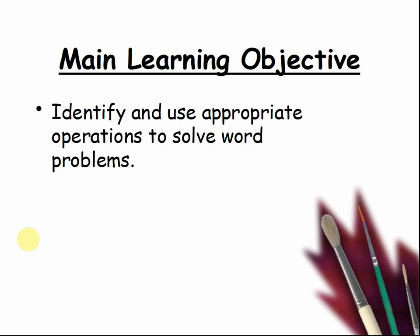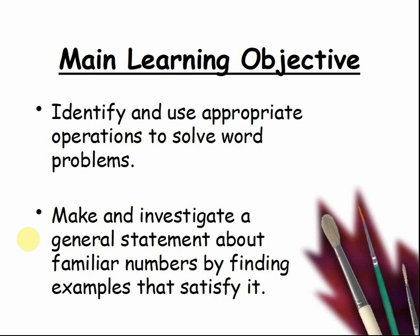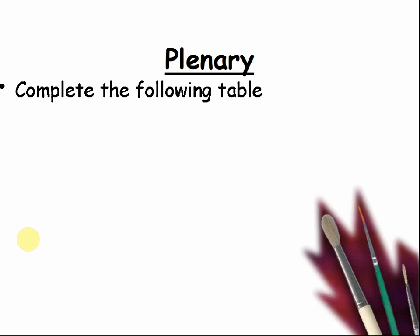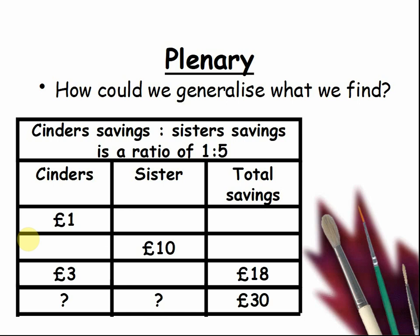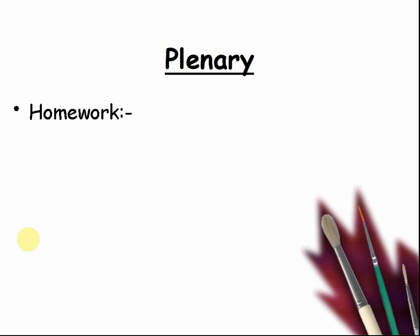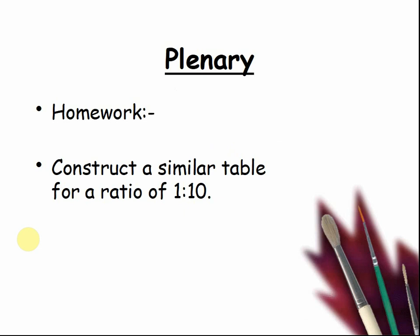Main learning objectives: identify and use appropriate operations to solve word problems; make and investigate a general statement about familiar numbers by finding examples that satisfy it. Complete the following table, pause the video and work through it. How could we generalise what we find? Pause the video and discuss the question. Good work! Construct a similar table for a ratio of one to ten — or, of course, you could do it right now. Pause the video if you'd like to continue.